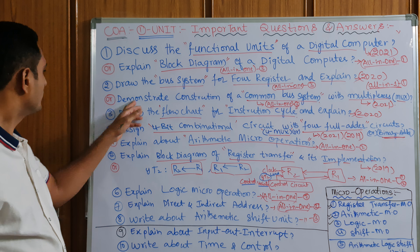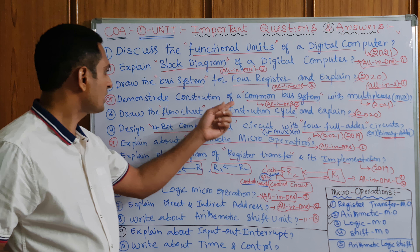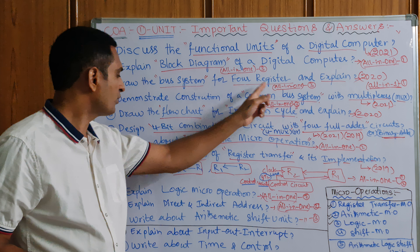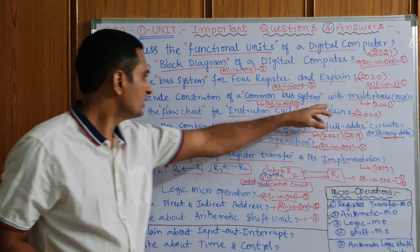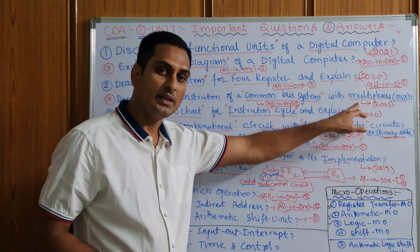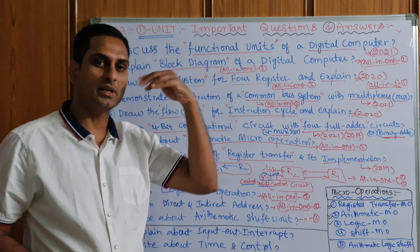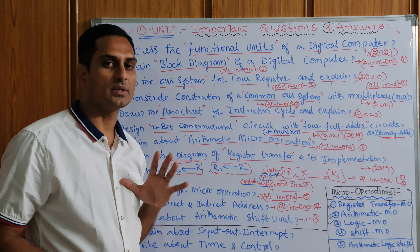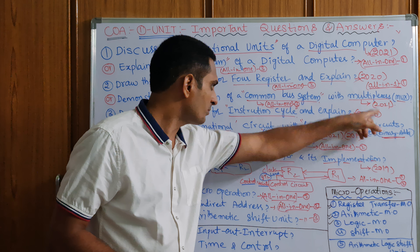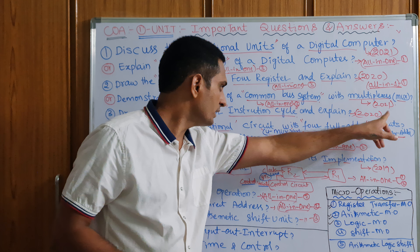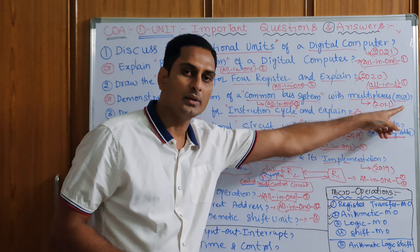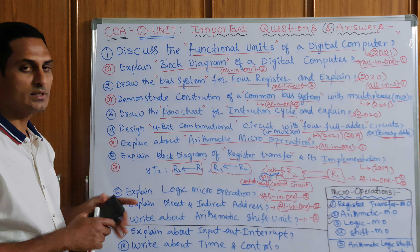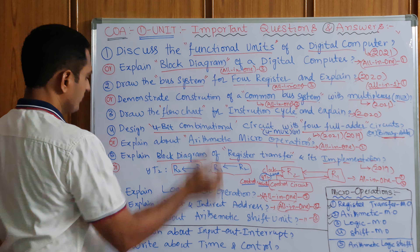The same question is also given differently as 'demonstrate construction of common bus system.' Common bus system or bus system for four registers has four multiplexers and four registers — the full diagram is called common bus system. In the 2021 paper it was given as 'mux or multiplexer four or four registers.' The keyword here is 'common bus system.'